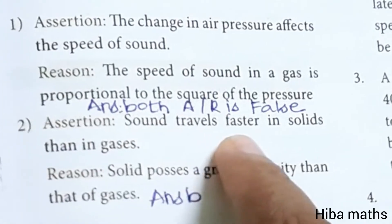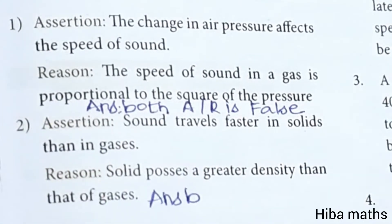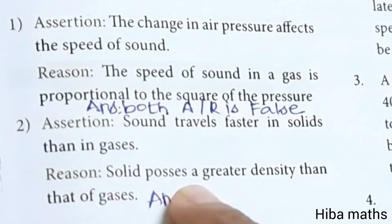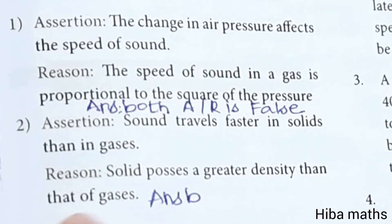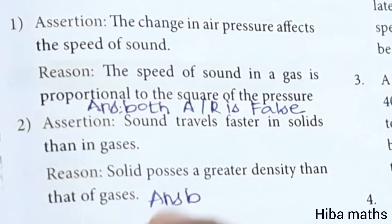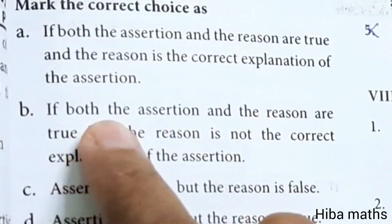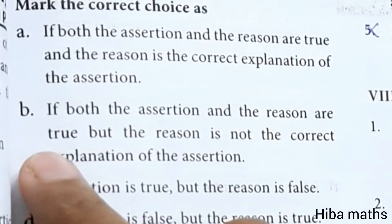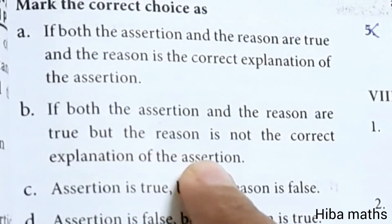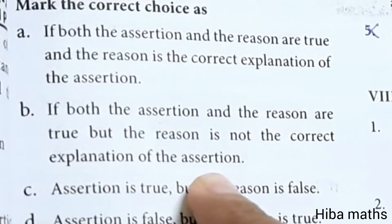Second question. Assertion: sound travels faster in solids than in gases. Reason: solids possess a greater density than that of gases. Answer: B. If both the assertion and reason are true, but the reason is not the correct explanation of the assertion.